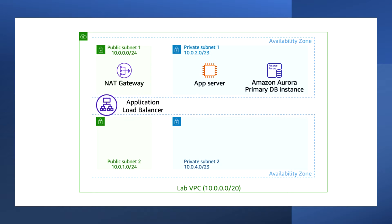The pre-created resources include public and private subnets in each Availability Zone, an Internet Gateway associated with the public subnet, a NAT gateway in one of the public subnets, an Application Load Balancer deployed across the two public subnets to receive and forward incoming application traffic, an Amazon EC2 instance in one of the private subnets running a simple inventory tracking application, and an Amazon Aurora DB cluster containing a single DB instance in one of the private subnets to store inventory data.